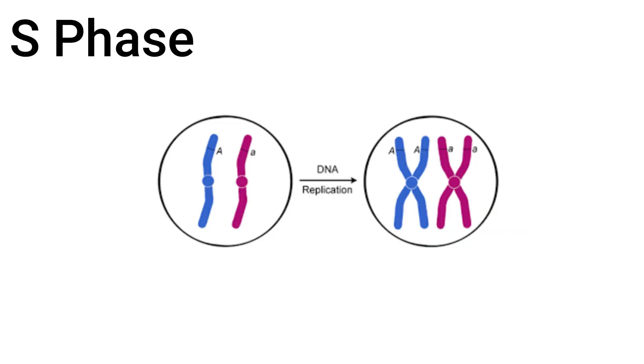The cell could also go into the S phase or the synthesis phase. When DNA synthesis occurs in this phase, the cell takes its 46 chromosomes and replicates them in a process called DNA replication.